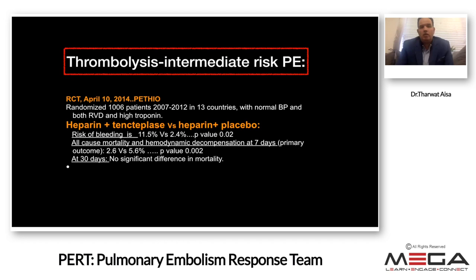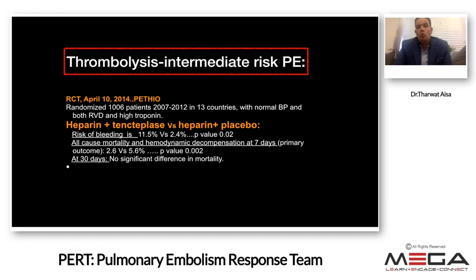One of the key studies, highlighted by Dr. Hassan in the previous presentation, is the PEITHO trial. They compared anticoagulation alone versus anticoagulation plus thrombolytic therapy for intermediate-risk PE, looking at bleeding risk, all-cause mortality, and PE-related mortality. There was a significant increase in bleeding risk in patients receiving thrombolytics. All-cause mortality and hemodynamic decompensation at seven days improved significantly, however PE-related mortality at seven and thirty days showed no significant difference.